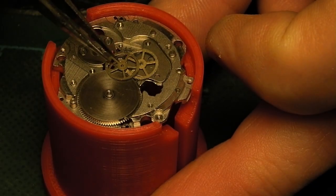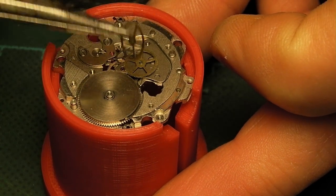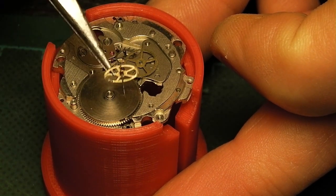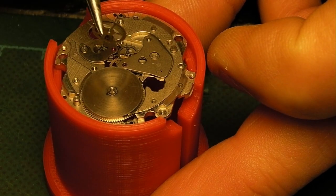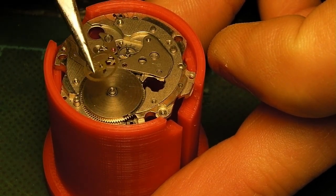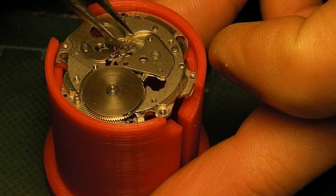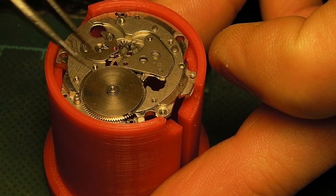On top of this bridge are two dia-fix jewels—they are a pain. Here is the combined click and click spring for the ratchet wheel. We've got the fourth wheel, the third wheel, and the mainspring barrel.